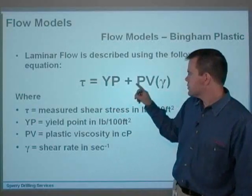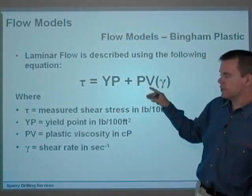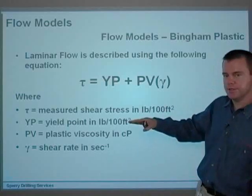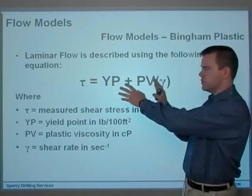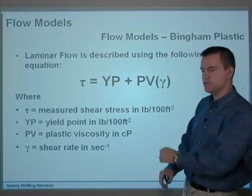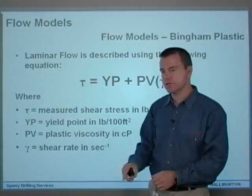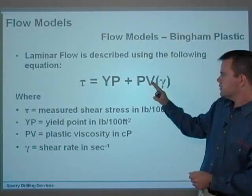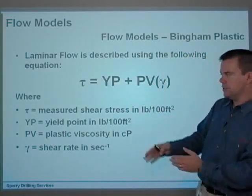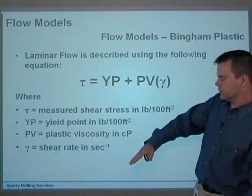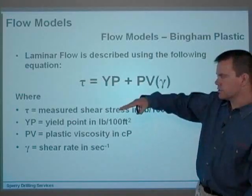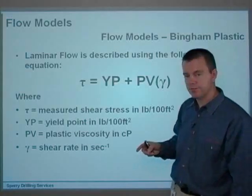You can see PV multiplied by gamma. That's determining the slope of the line in the same way. YP plus PV is your function that you're applying to your shear rate to get your shear stress. PV determines the slope of the line. YP is something that you add to that line, which basically raises the line up on the graph. I'll show you this graphically in a second.